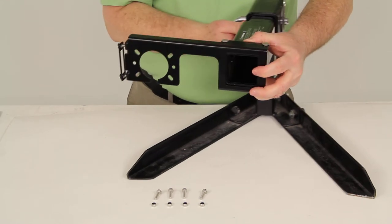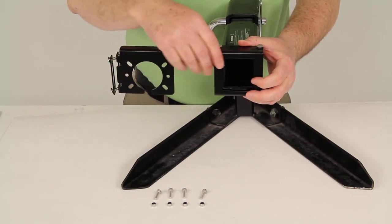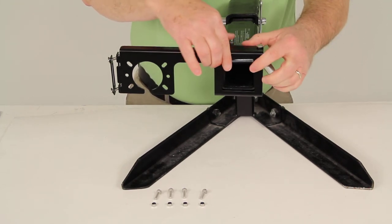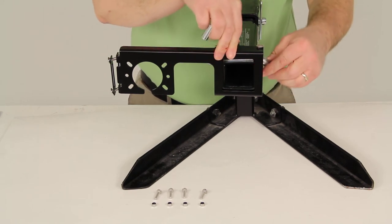And then as you see here, it has the notched access area to where when you put like a pin and clip through your hitch, you'll have access to put the clip right onto the pin.